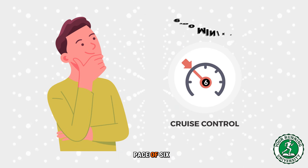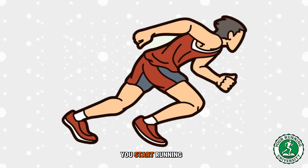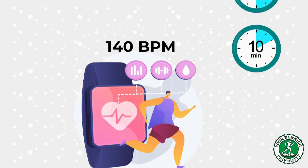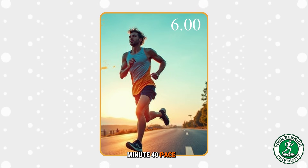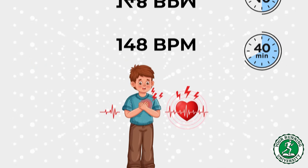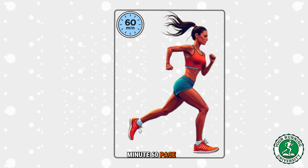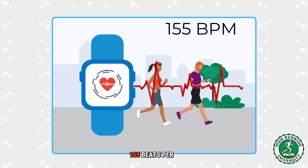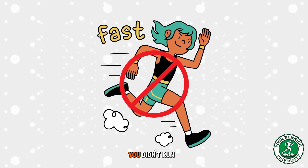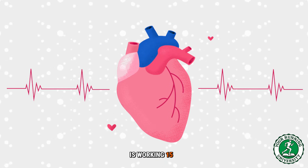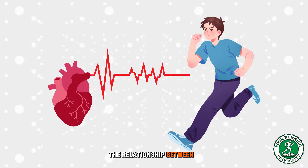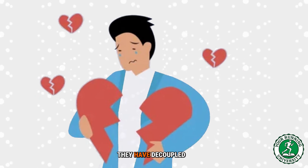Imagine you set your cruise control at a pace of 6 minutes per kilometer. You start running. Minute 10 — your heart rate is stable at 140 beats per minute. Minute 40 — pace is still 6 minutes, but heart rate creeps to 148 beats per minute. Minute 60 — pace is still 6 minutes, heart rate hits 155 beats per minute. You didn't run faster, you didn't run up a hill, but your heart is working 15 beats harder to produce the exact same output. The relationship between pace and heart rate has broken — they have decoupled.